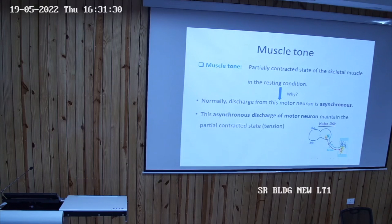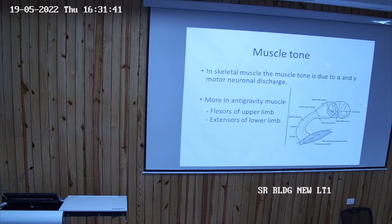And this asynchronous discharge of the motor neuron, this maintains that partially contracted state in the muscle. And in skeletal muscle, the muscle tone is due to this alpha and gamma motor neuron discharge.